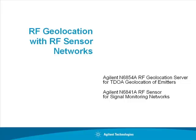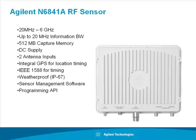This is a demonstration of RF geolocation using a network of RF sensors. We will be using the Agilent N6841A RF sensor, which has a frequency range of 20 MHz to 6 GHz with an information bandwidth of up to 20 MHz. It has half a gigabyte of capture memory, DC power, and two antenna inputs.